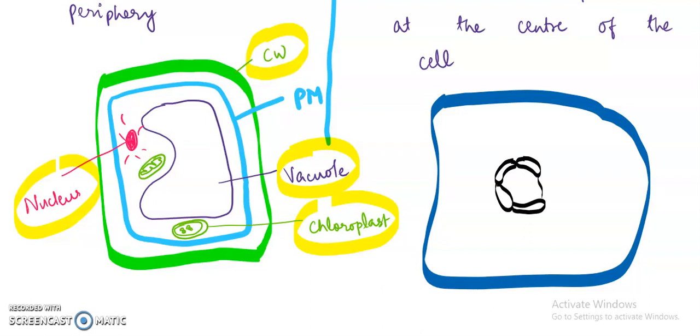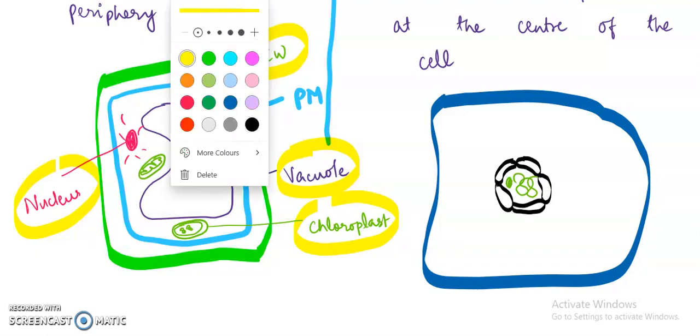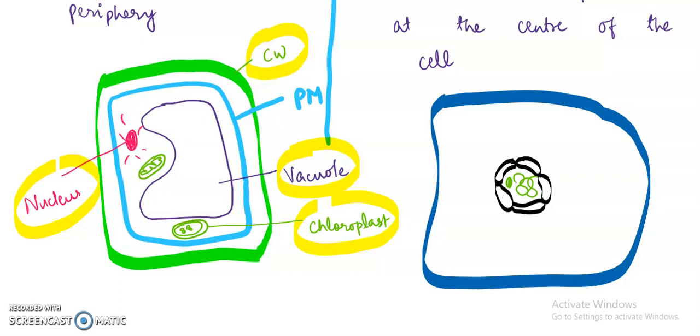For complete clarity you can watch out the video on nucleus once again. Chromatin, nucleolus, then the base material as nucleoplasm that I am coloring as yellow. And labeling I am not going to do. You can watch out the video on nucleus it will be clear to you.